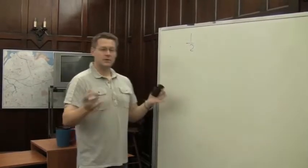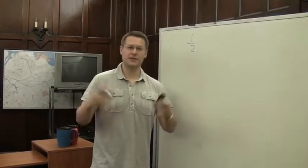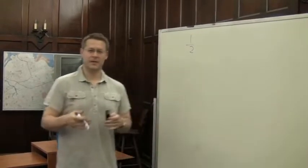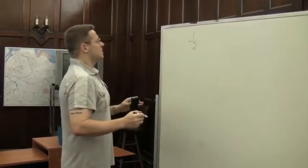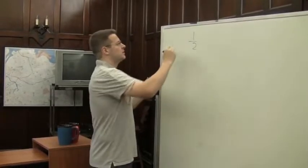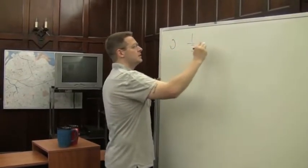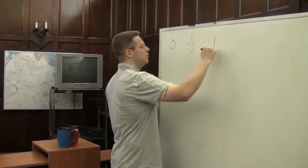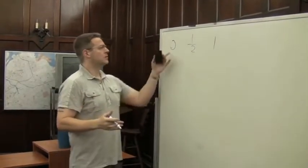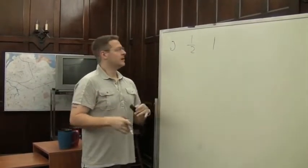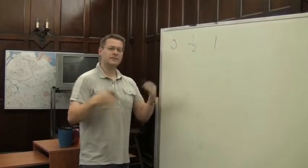You say one desired outcome over two possible outcomes, giving you a probability of one half. You would expect it to happen one out of every two times. Some people think in terms of percentages — one half is just 50%. Normally, when we're dealing with probability, we speak in terms between zero and one. Zero would be something that's impossible.